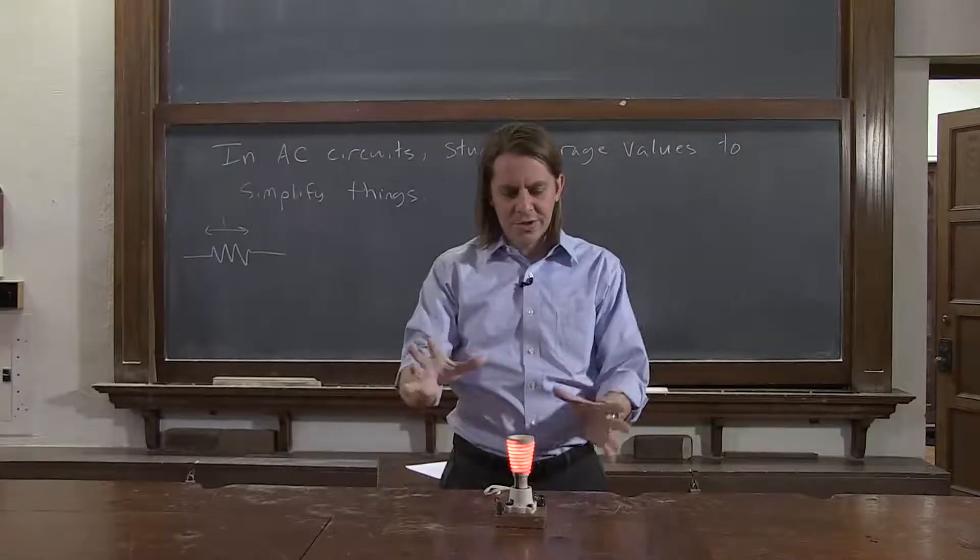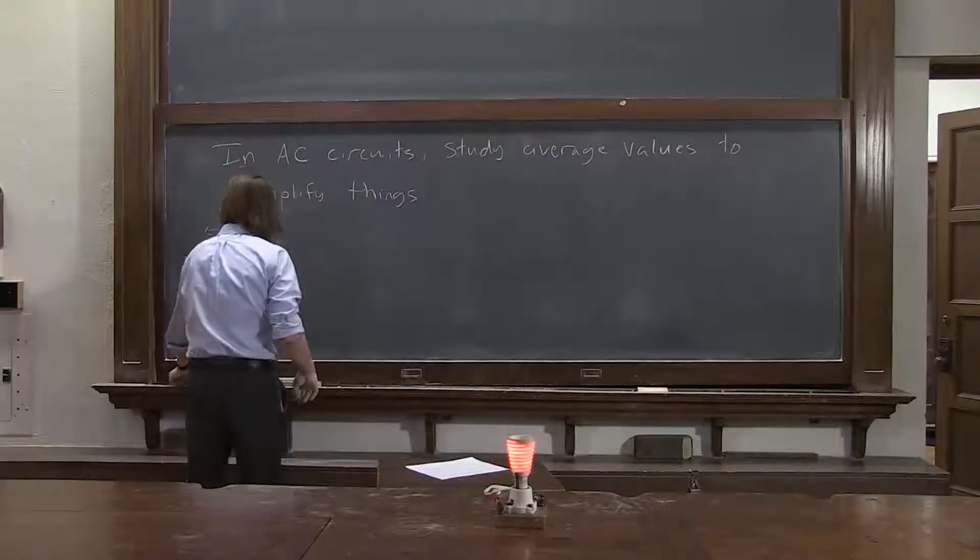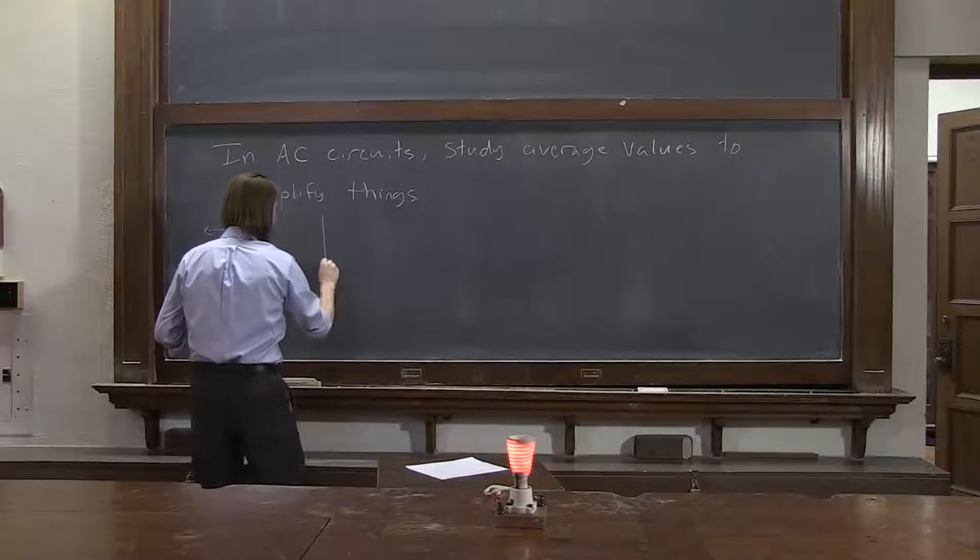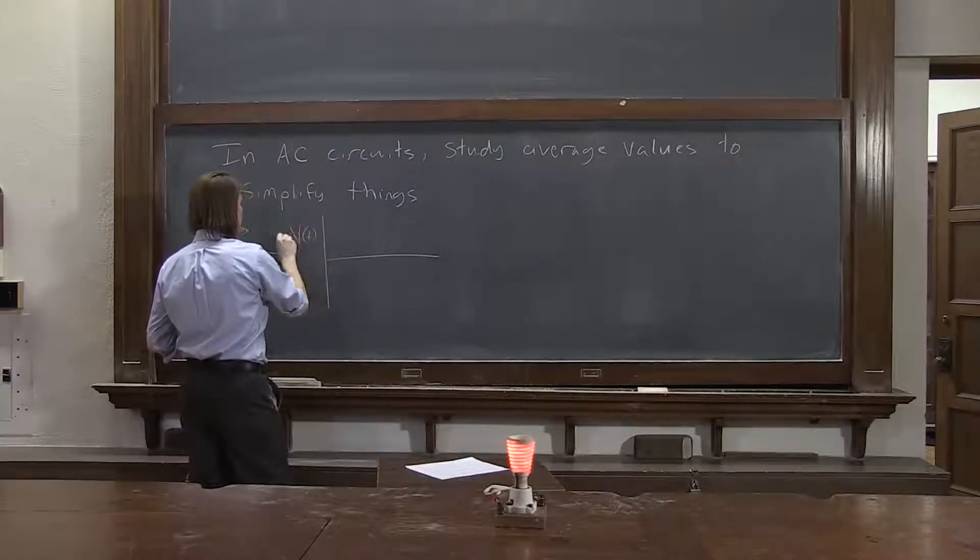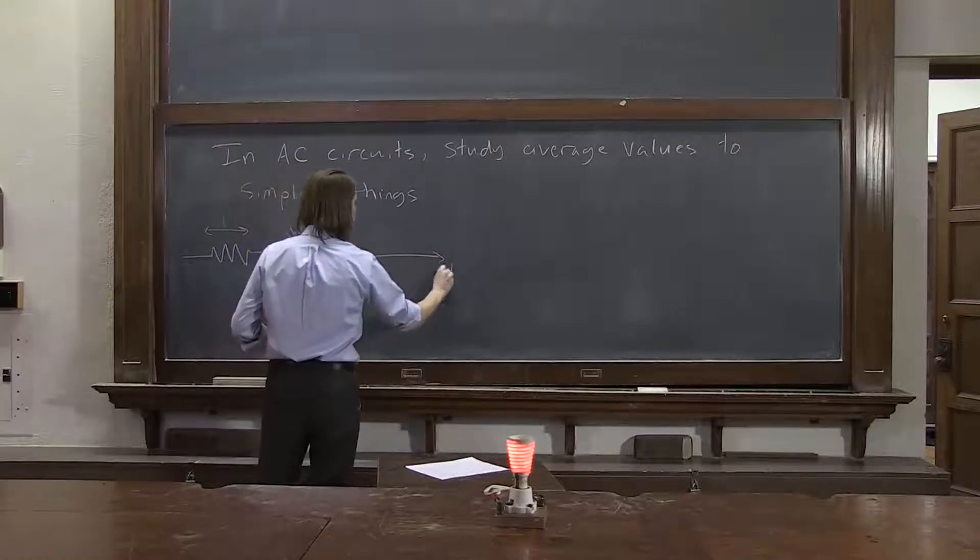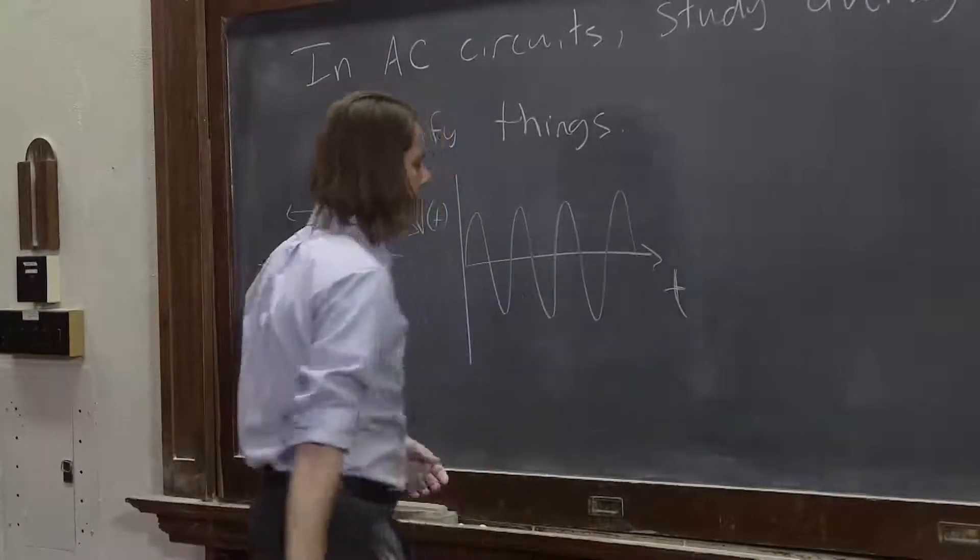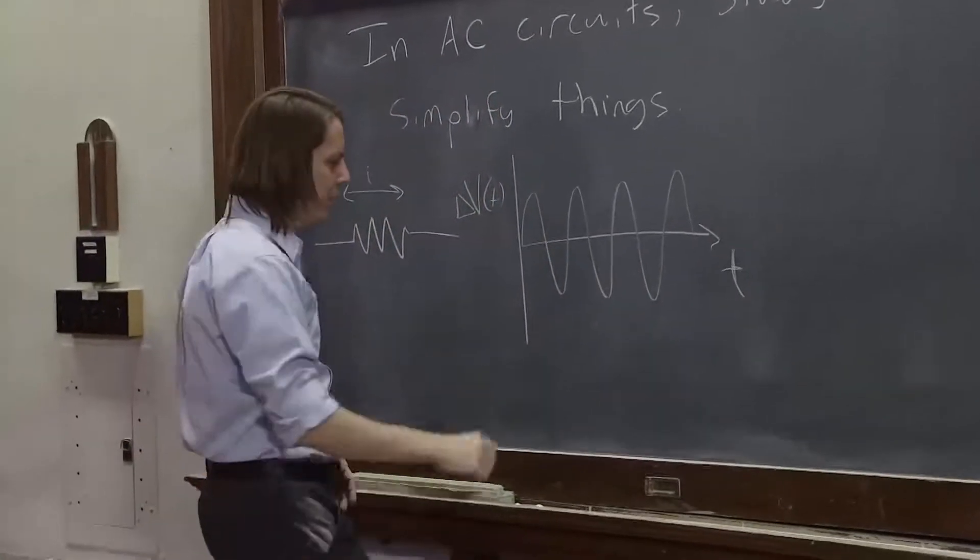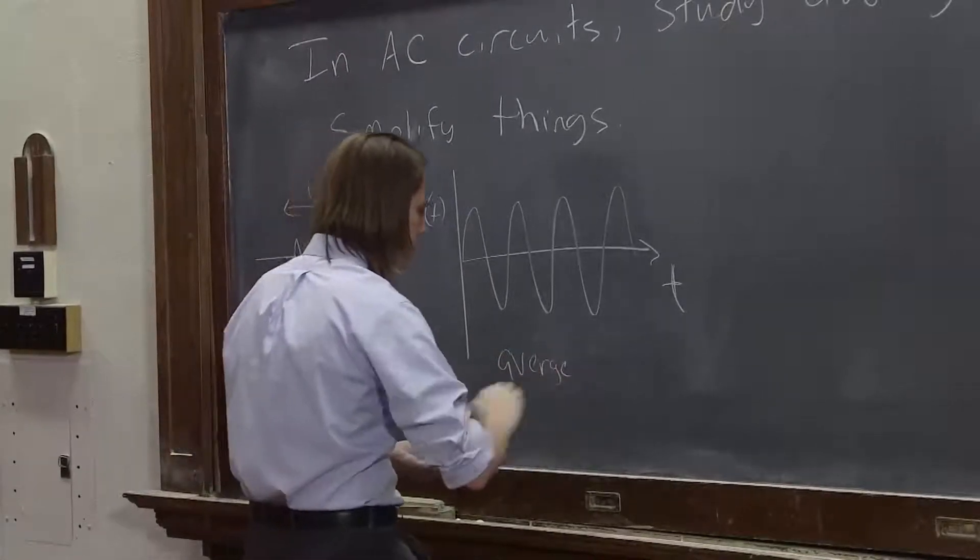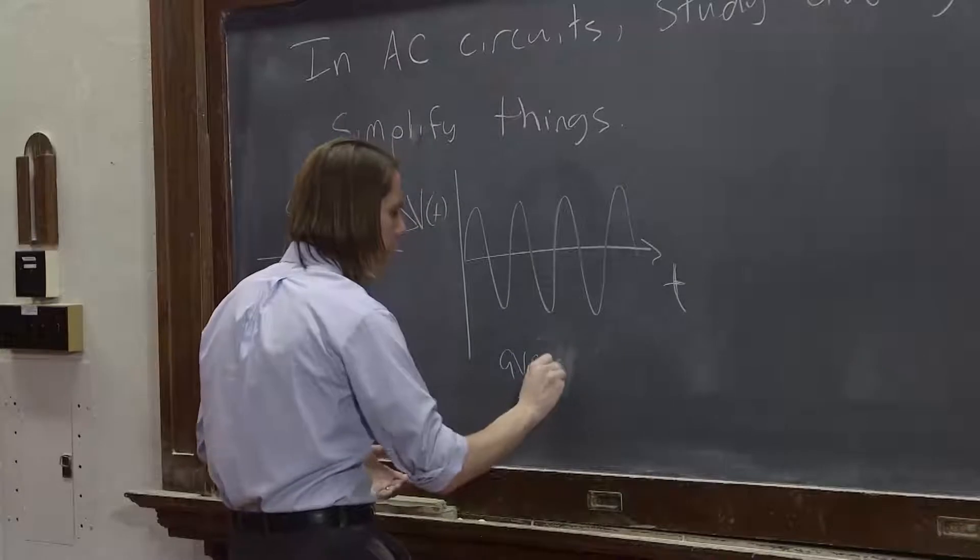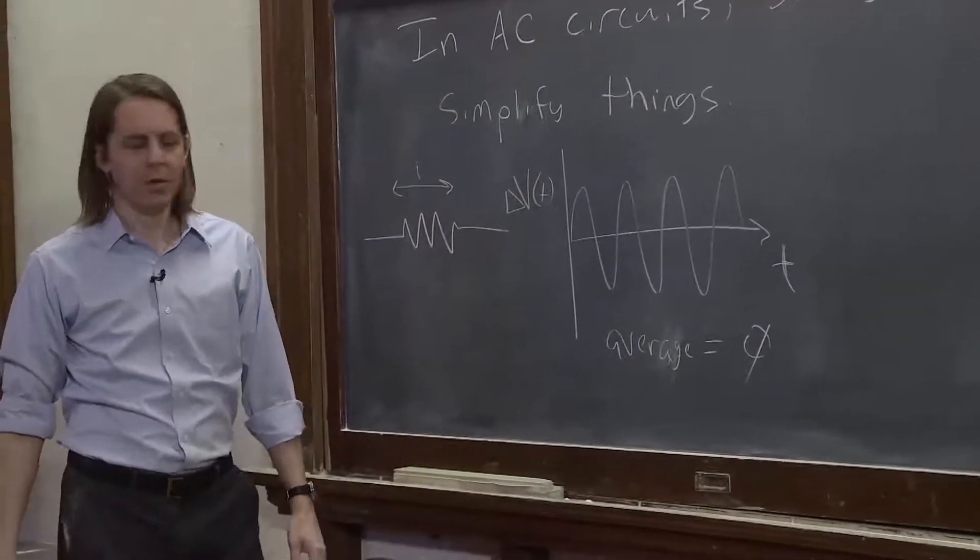So the question is, how should we describe this? What kind of average should we use? We could start looking at different possibilities. Here is the volts, the delta V as a function of time. If we plot it, it's just going to be some sinusoidal oscillation, and therefore the average is zero. So that doesn't seem like a very good choice.